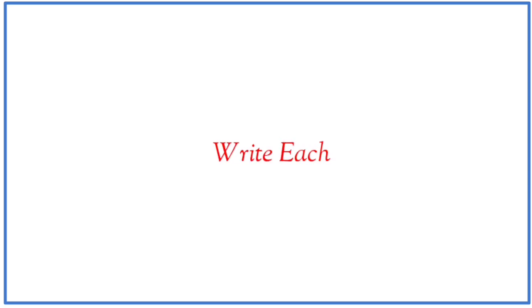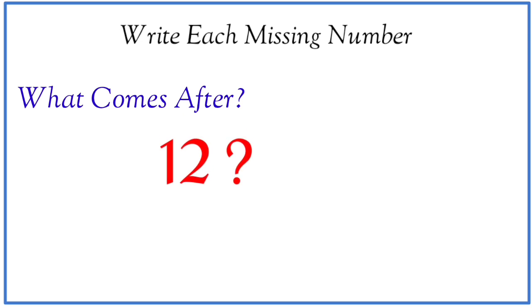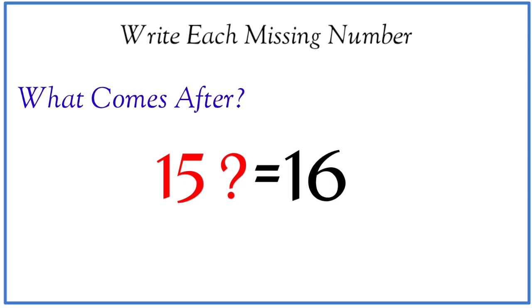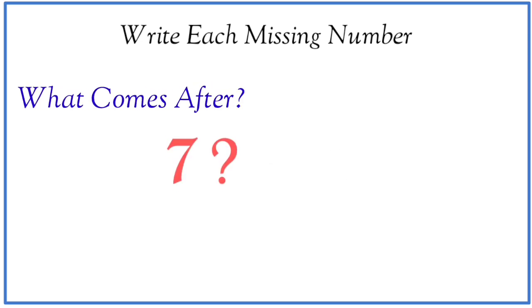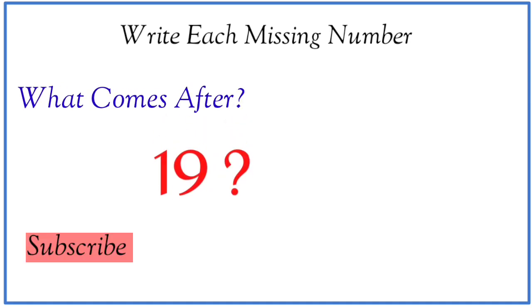Write each missing number. What comes after twelve? Thirteen. What comes after fifteen? Sixteen. What comes after seven? Eight.